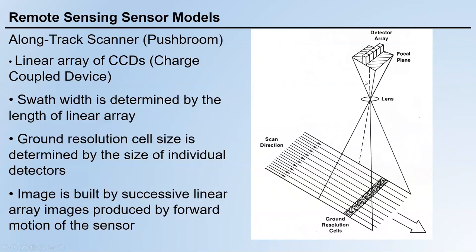The image is built by successive linear array images produced by forward motion of the sensor. As the system moves forward, there are multiple scan lines, and these detectors are responsible for the area along their own scan line.